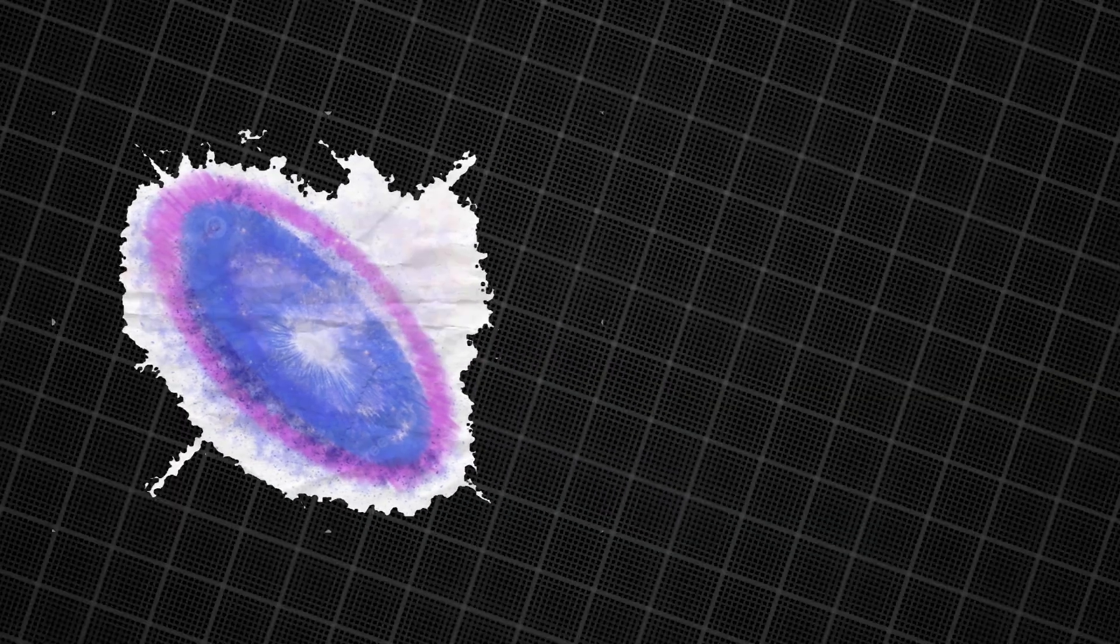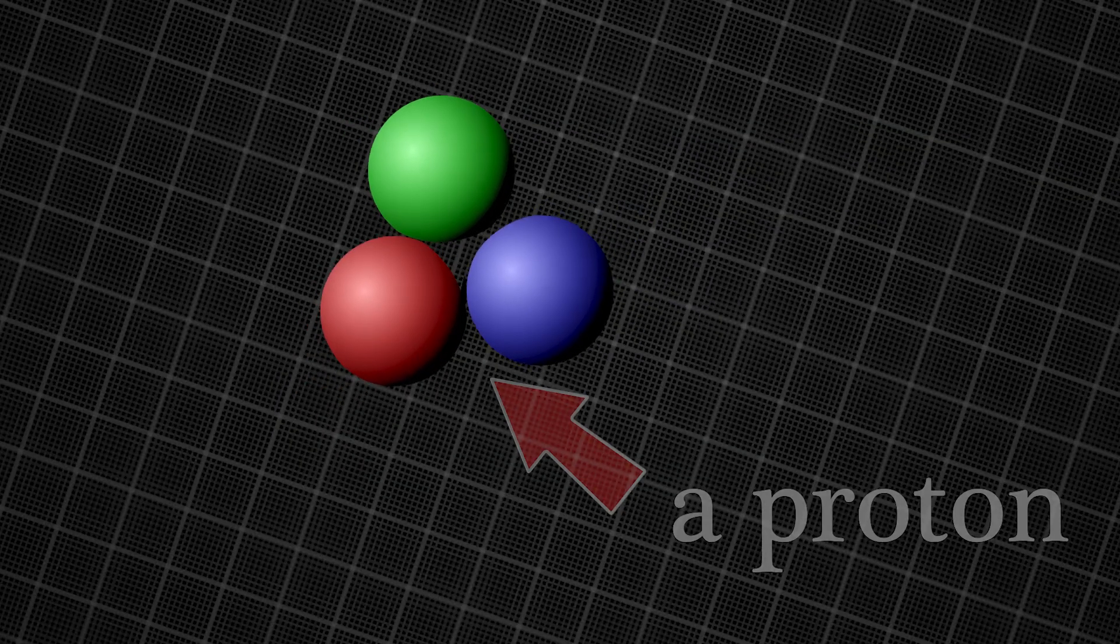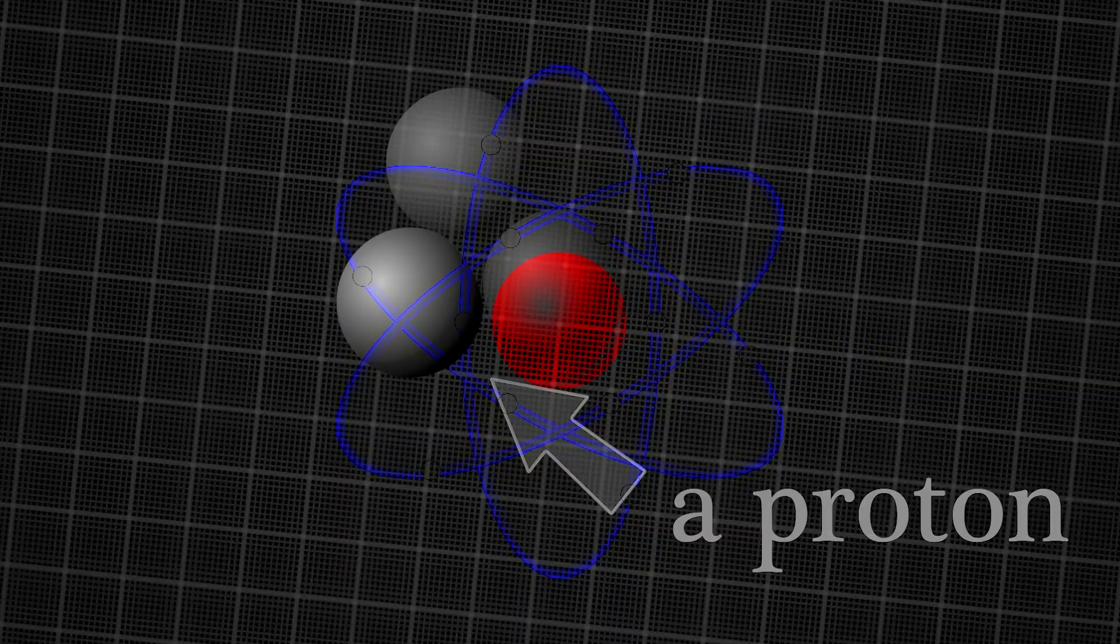Right after the Big Bang, the universe was extremely hot and dense, filled with tiny particles moving around in an energetic soup. Some of these particles, called quarks, combined to form protons and neutrons, the building blocks of atomic nuclei.